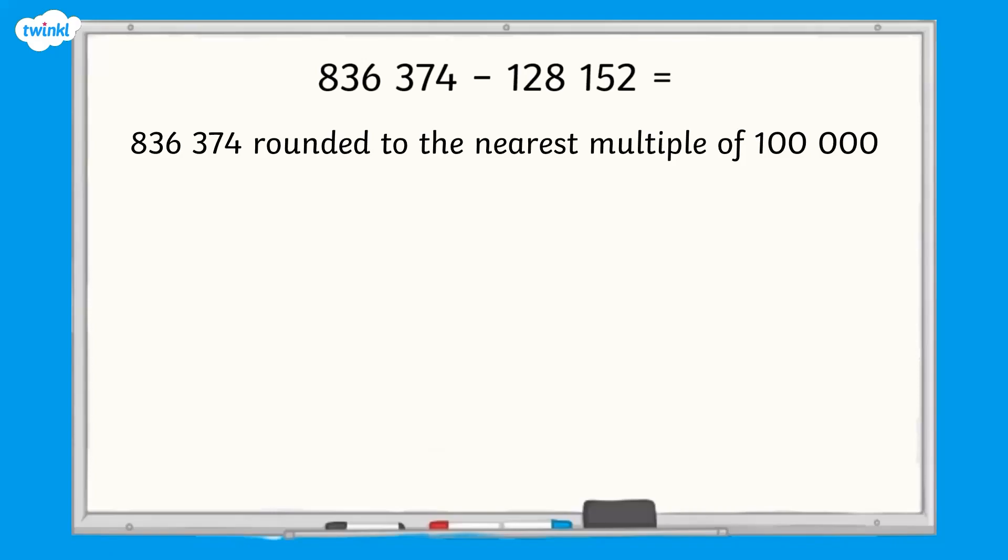When we round to the nearest multiple of 100,000, the previous multiple is 800,000 and the next multiple is 900,000. So the midpoint is 850,000.